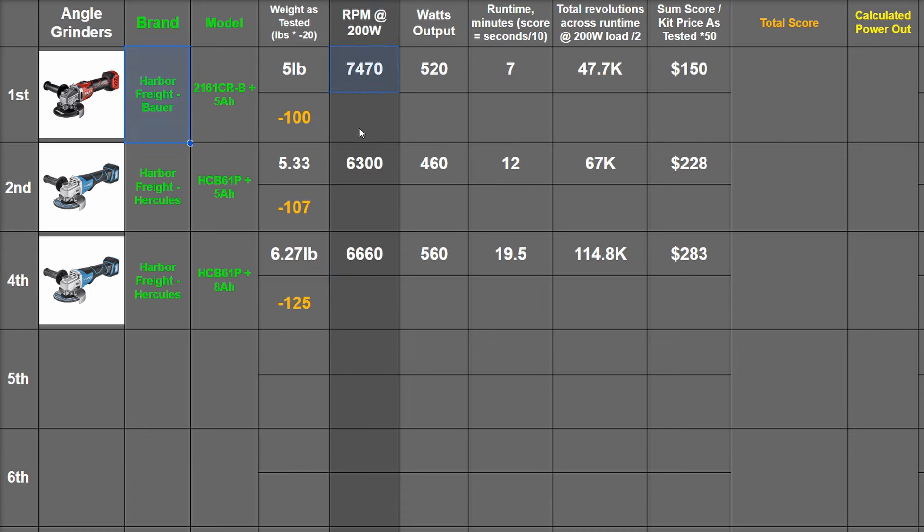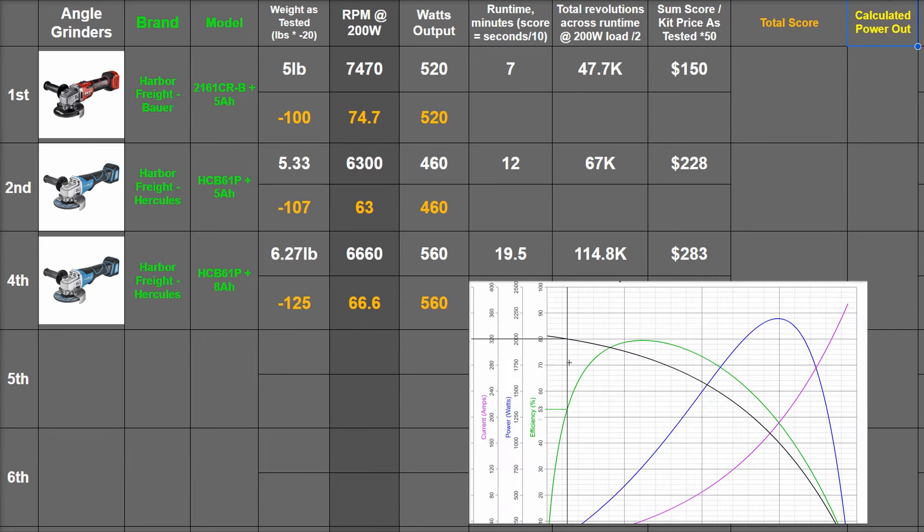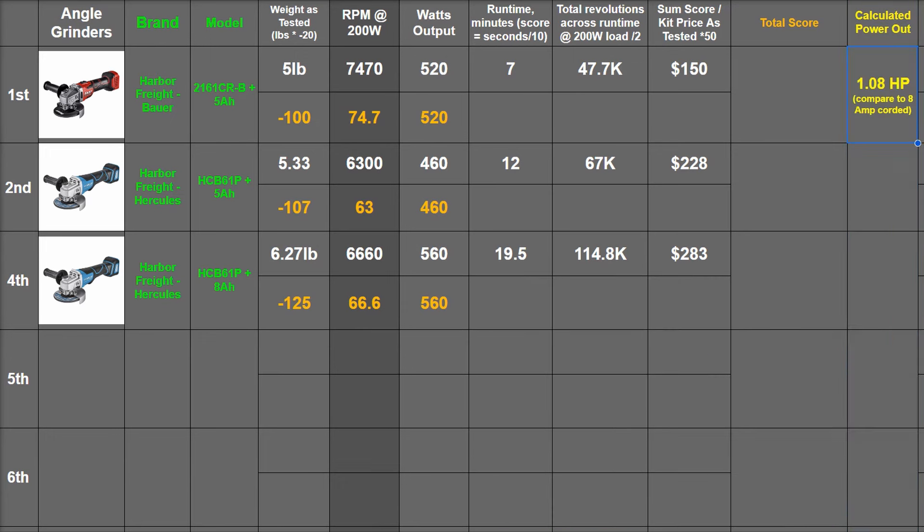RPM under load favors the Bauer for whatever reason. That's 74.7, 63, and 66.6. Then a full 520, 460, and 560 points for their watts output. No real power figures on these tools being advertised, so this is sort of the only place you're going to see it. So we feel it's worth some points when ranked here for sure, based on using math from the curves provided with our BattleBots motor.